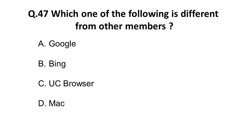The next question: which one of the following is different from the other members? The four options are Google, Bing, UC Browser, and Mac. Google, Bing, and UC Browser are all search engines, while Mac is an operating system. The odd one out is Mac.